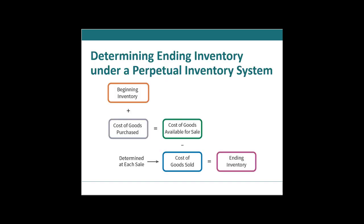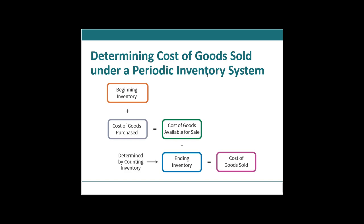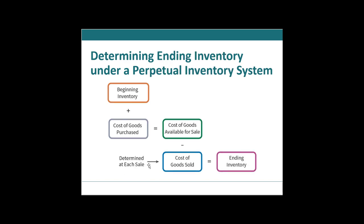In picture format, it looks very similar to the periodic inventory system. However, what is different is when cost of goods sold is determined — and that is after every single sale. You could imagine how difficult that was before software and point-of-sale systems; back when everything was pen and paper, this would be extremely burdensome. But determined after every sale, we at all times know what inventory we have on the shelf and what items we've sold throughout the period.